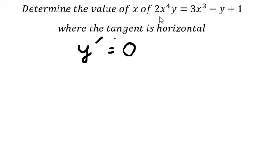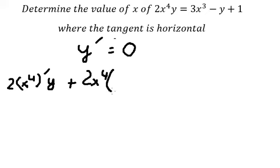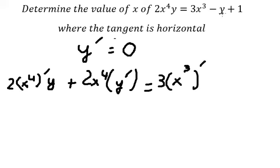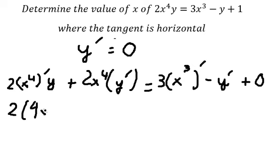If we look carefully at s to the power of 4y, we will do the first derivative of s to the power of 4, then the first derivative of y. Then we do the first derivative of s to the power of 3, and the first derivative of y. The first derivative of a constant equals zero. Now we need to simplify.